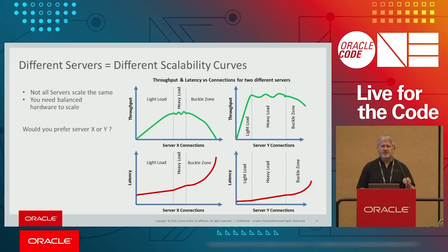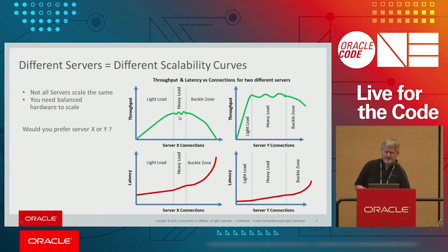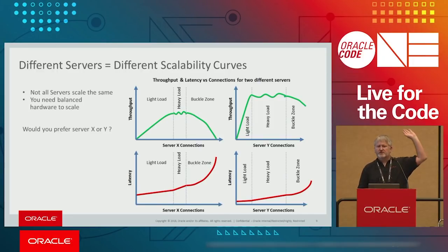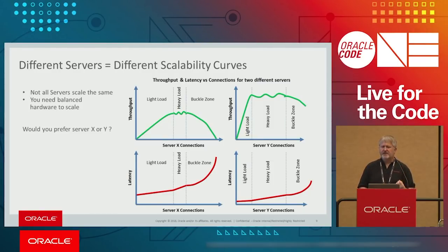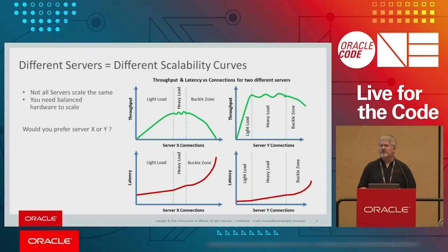What I'm not saying is the curve is the same for all servers — I'm saying they have the same characteristics. Server X scales up, flattens off, and drops off pretty quickly with latency shooting up. Server Y on the right scales faster, it's flat for longer, and then starts to drop off and has lower latency. The point being, this is the characteristic performance curve. But it's more complicated than that — it's not just software, it's also hardware. You need balanced hardware to scale as well.